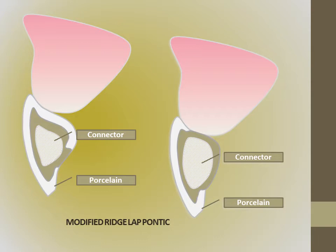The Pontix connector should be as bulky as space and aesthetics permits. Fabrication of the metal casting should be calibrated to receive the optimal layer of veneering material. The tissue surface of the Pontix may be of highly polished metal, but space permitting, porcelain may be used on the tissue surface of the Pontix, up to a 2 mm thick layer.